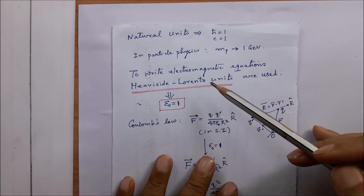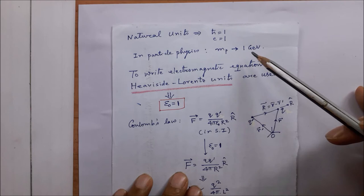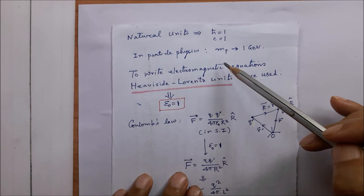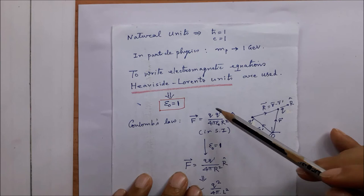In particle physics, therefore, natural units are h-cross equal to 1 and c equal to 1, and the rest mass of the proton is taken to be 1 GeV. However, we also have to deal with electromagnetic equations, such as Coulomb's law, which involves epsilon-0, the permittivity of free space — and we need to determine what its value will be in this system.